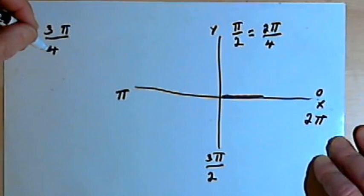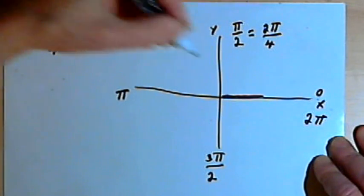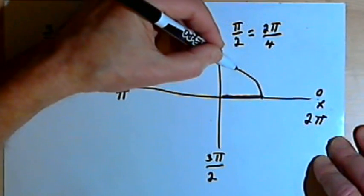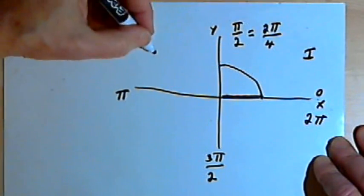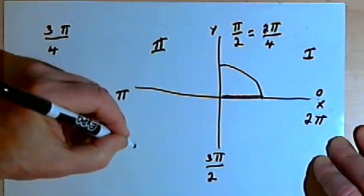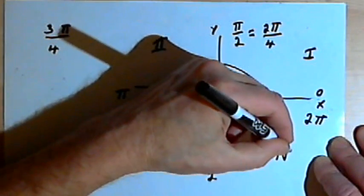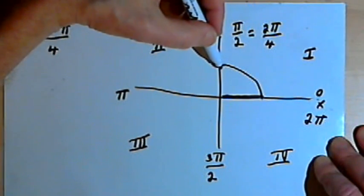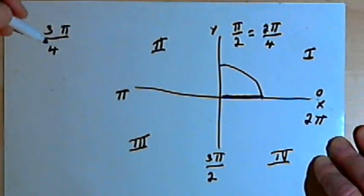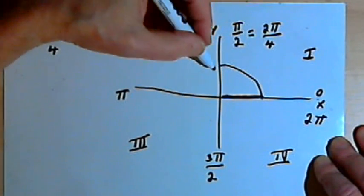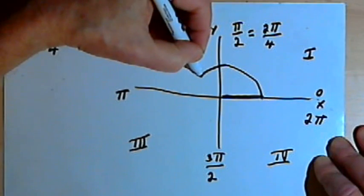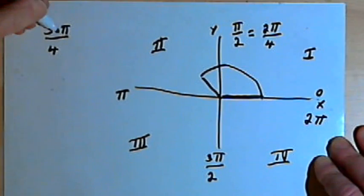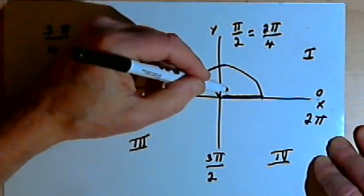So that means, starting in standard position, I'm going to go through the first quadrant. Let me label these quadrants. There's the first, second, third, and fourth quadrants. So I'm going to go through the first quadrant, that's 2π over 4. And I want 3π over 4, so I'm going to go halfway into the second quadrant and a rough sketch of that angle measuring 3π over 4 would look something like this.